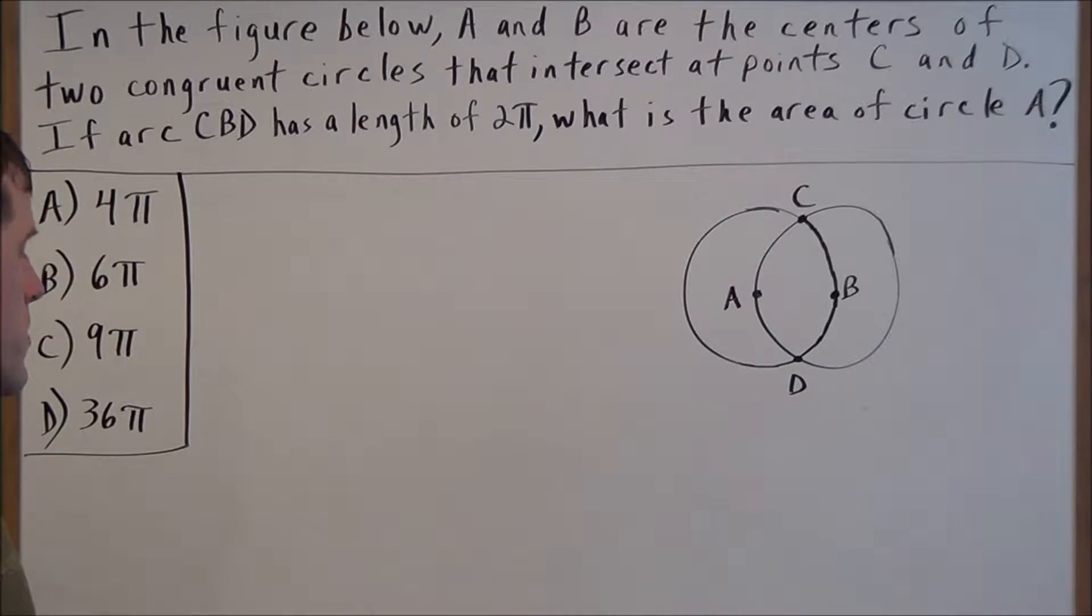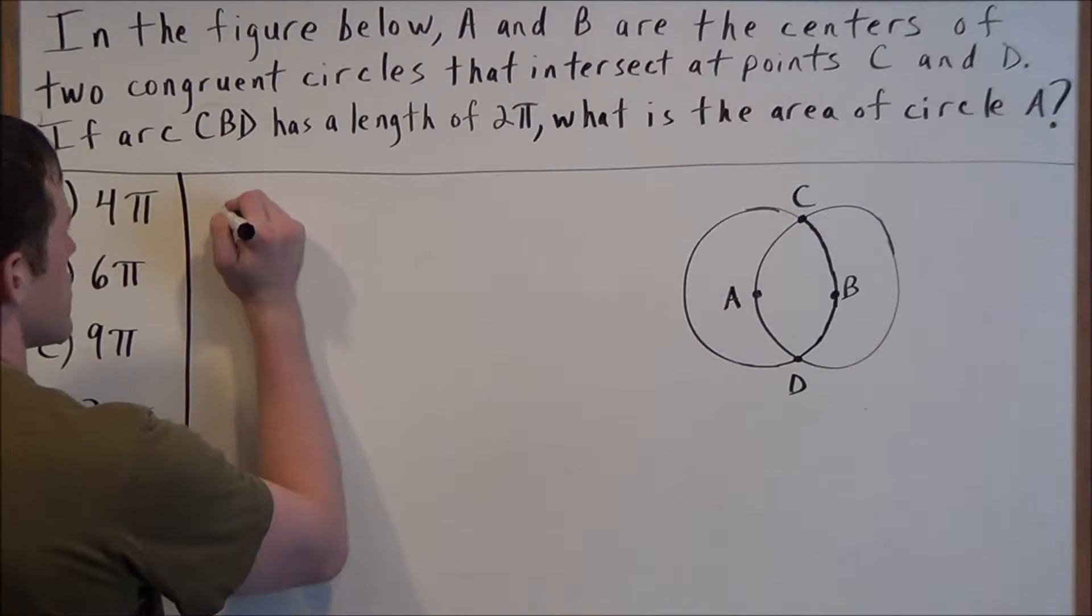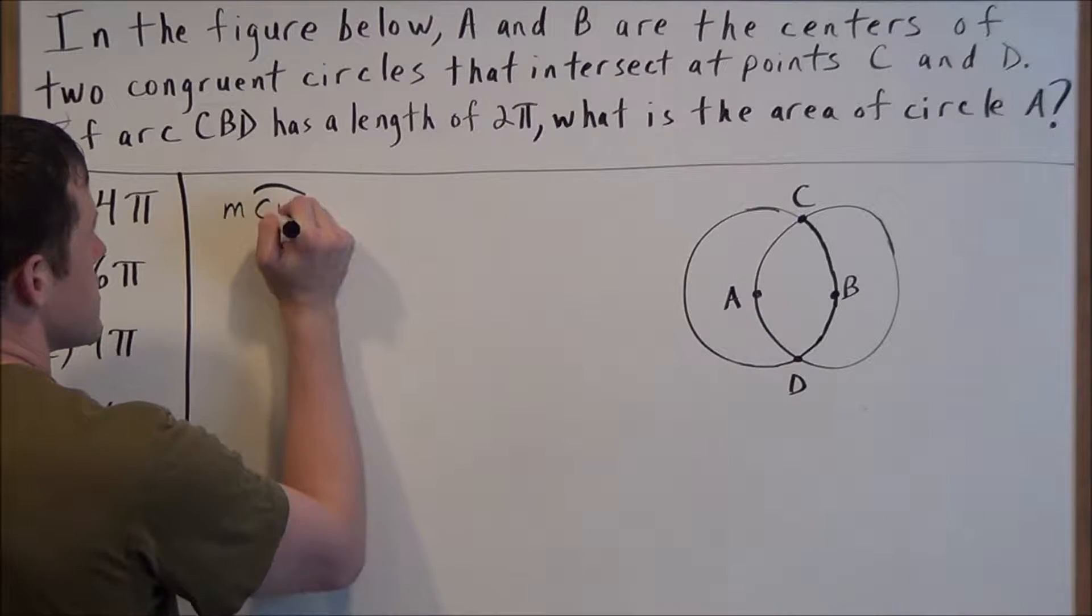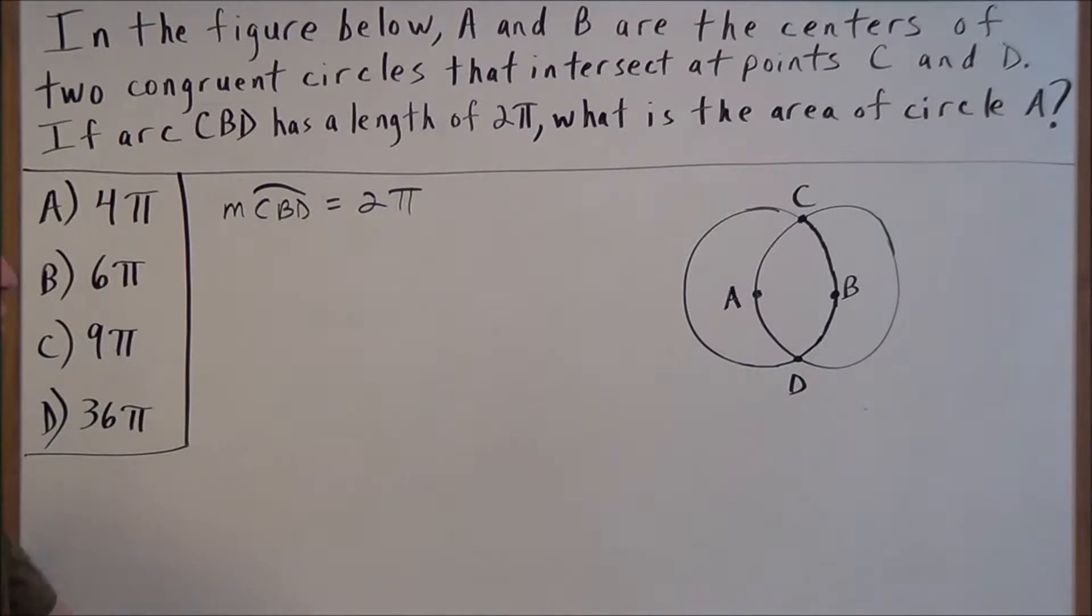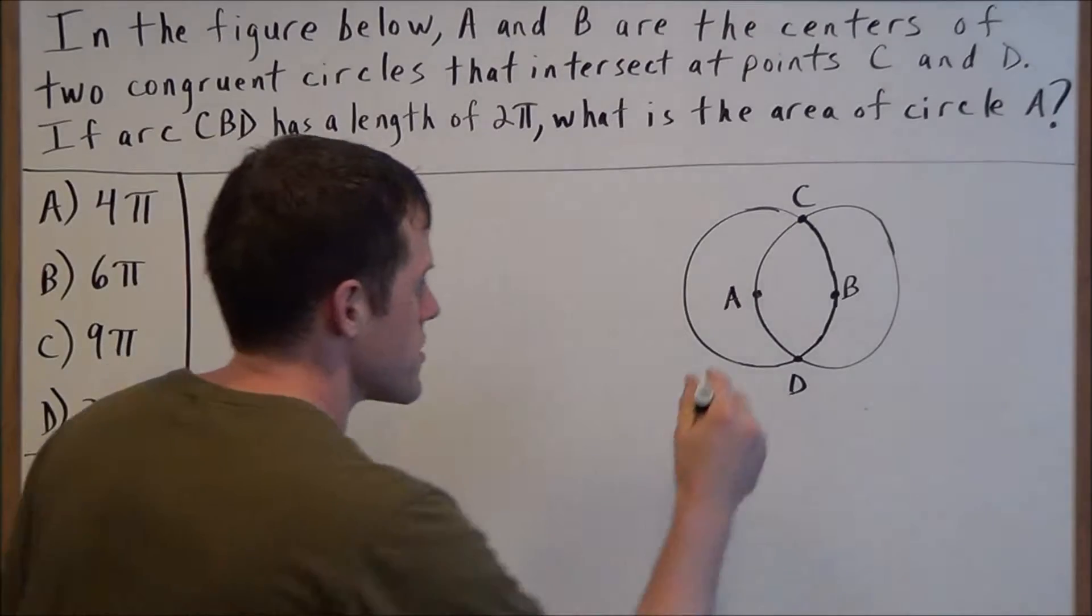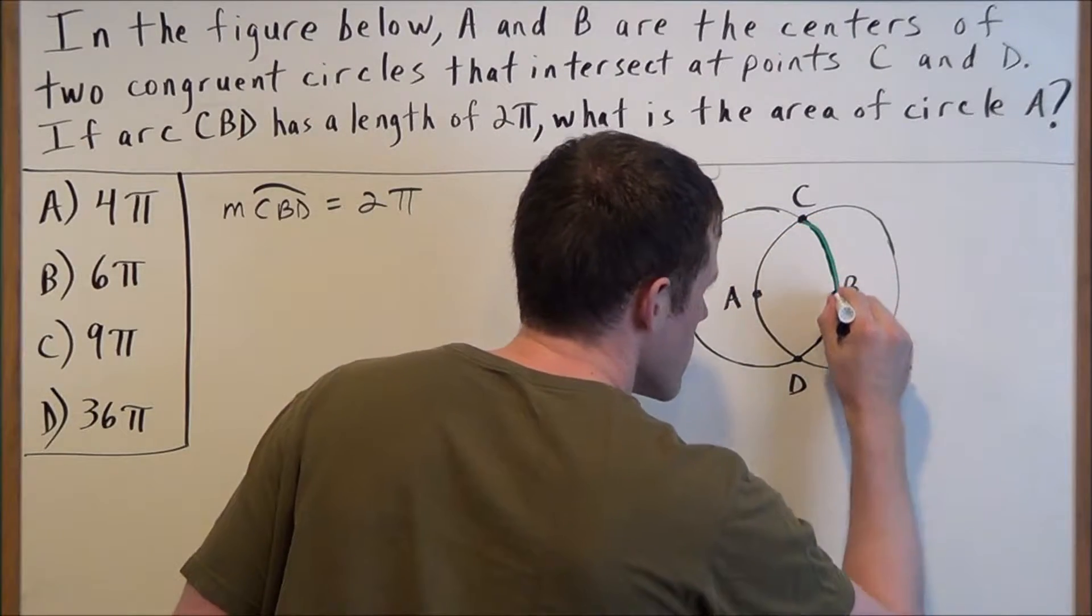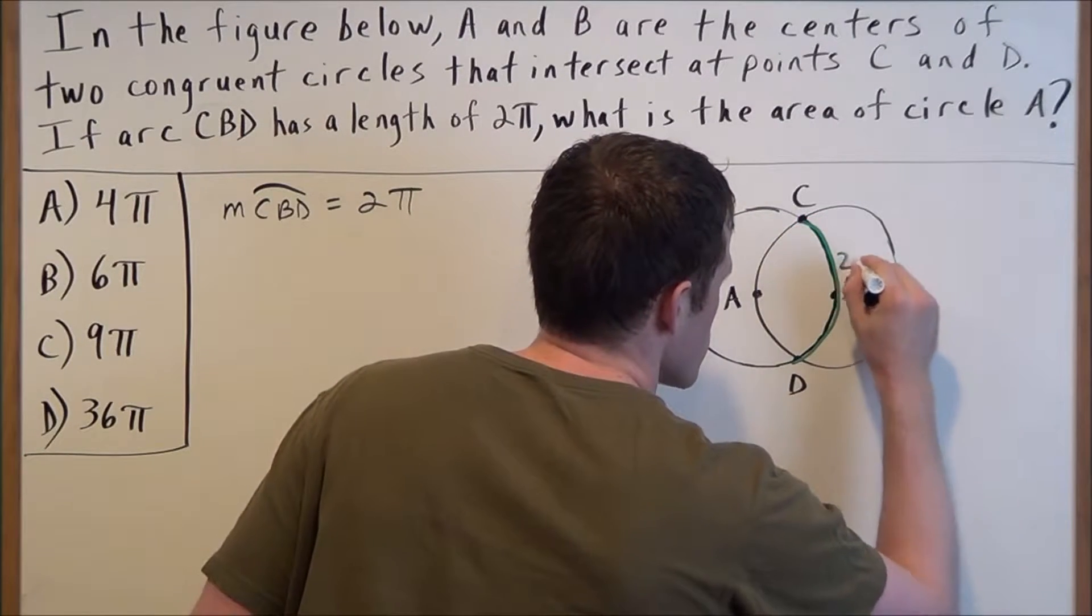For this problem, we want to make use of the given information. When we're told that the measure of arc CBD equals 2π, we could label that right away. Arc CBD is equal to 2π.